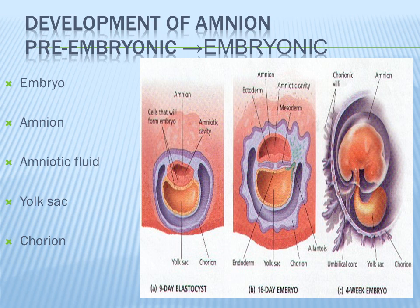The embryonic stage begins at day 14 and lasts until day 56. The blastocyst develops into an embryo, and different pieces separate into three specific layers: the endoderm, the ectoderm, and the mesoderm. It's from these layers that the different organs are derived. The ectoderm will eventually turn into the epidermis, hair, nails, eye, central nervous system, peripheral nervous system, skin, and glands.